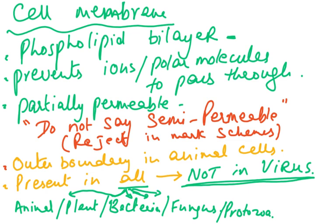The cell membrane is the outermost boundary in animal cells but is present in all living organisms: plant cells, animal cells, bacteria, fungi, protozoa, and yeast. The only thing that does not have a cell membrane is a virus. Viruses are not living organisms — they are studied in biology but they have no cells and are not actually living.